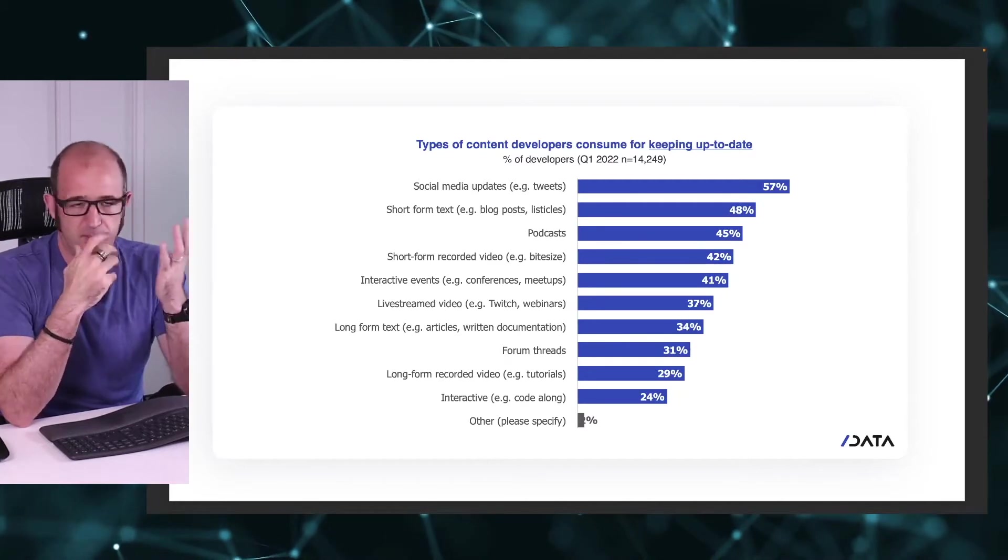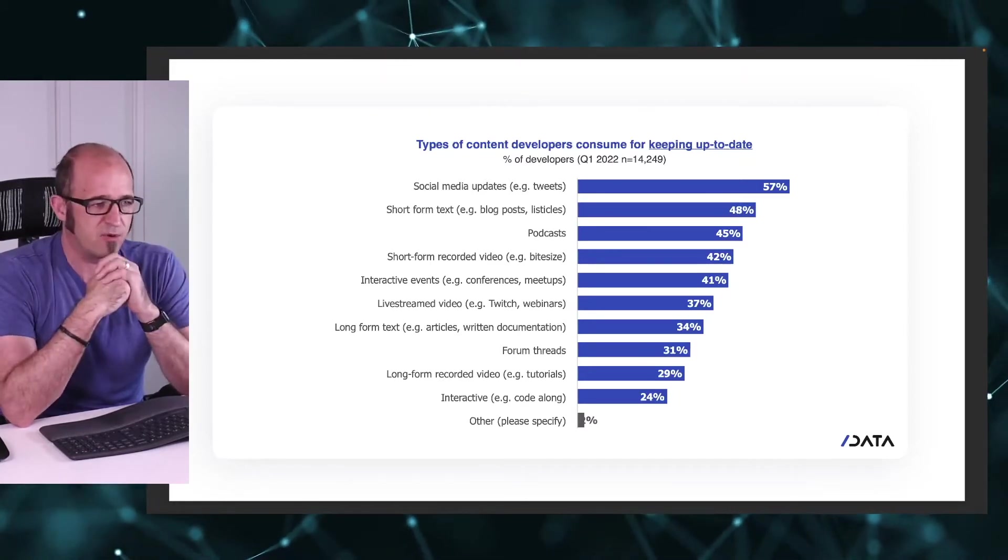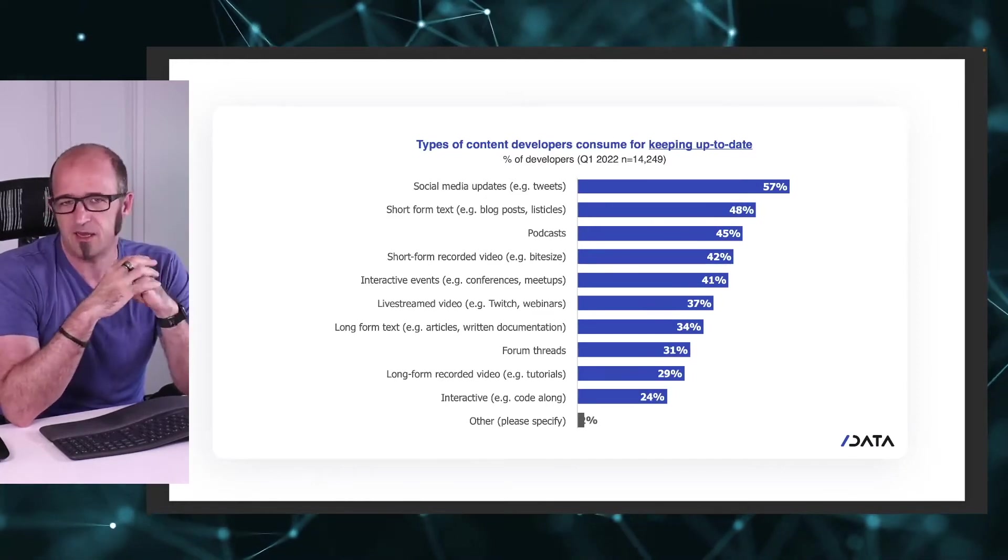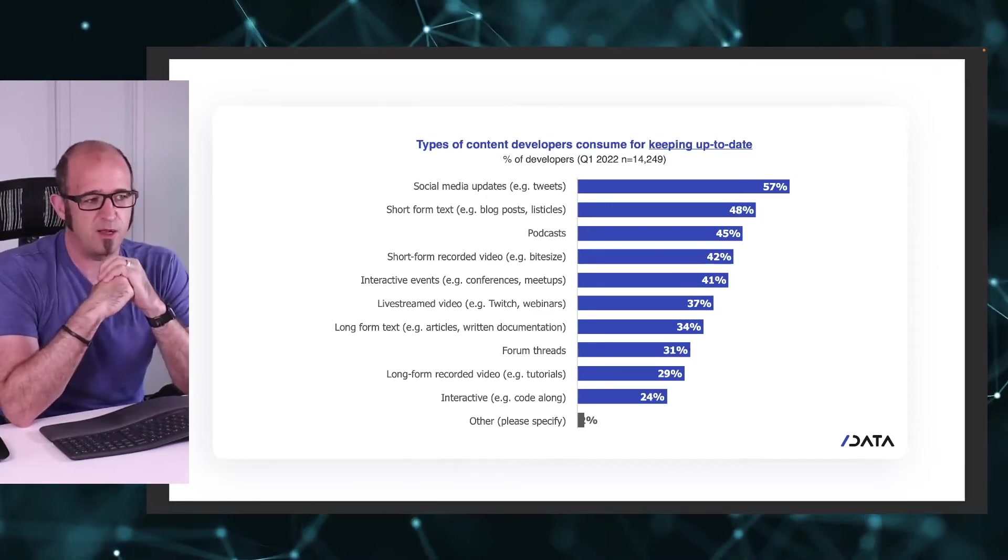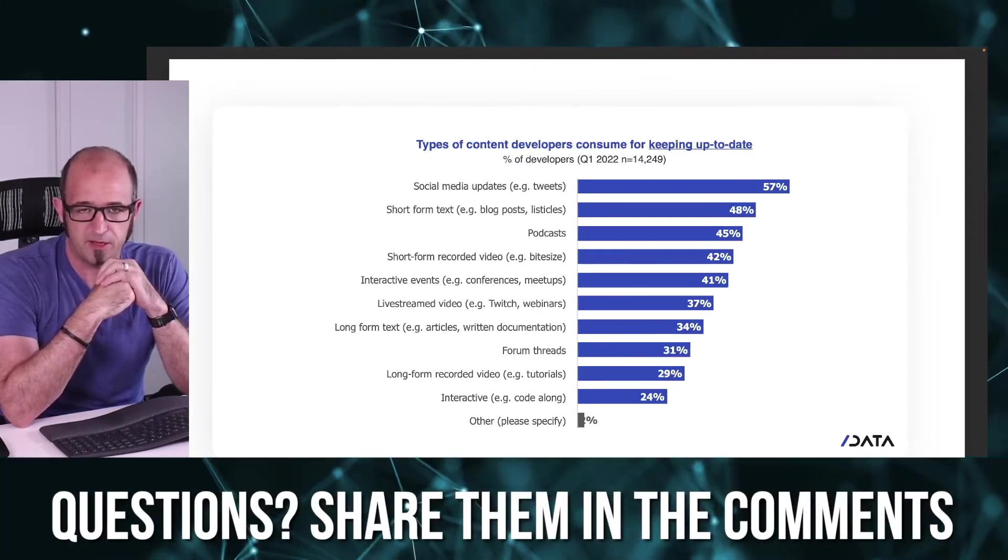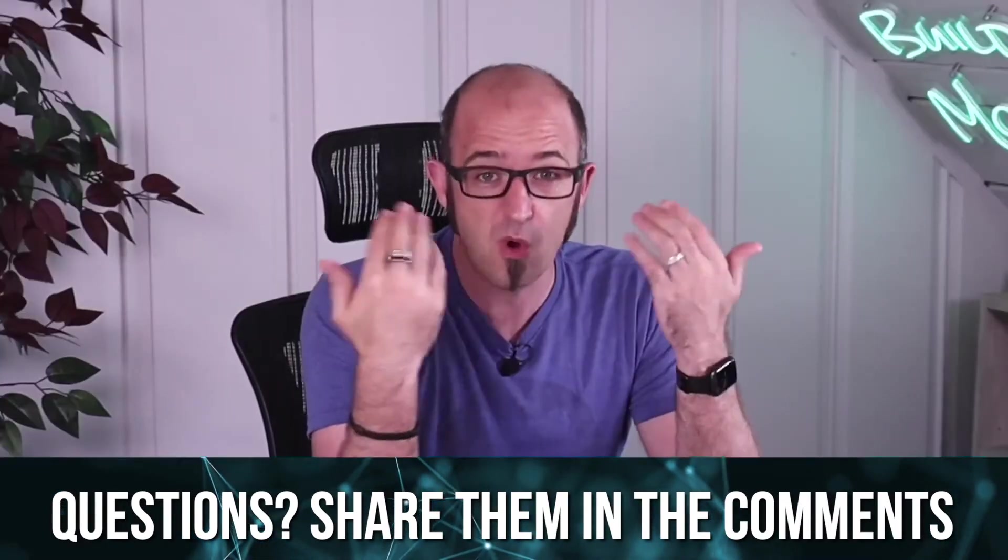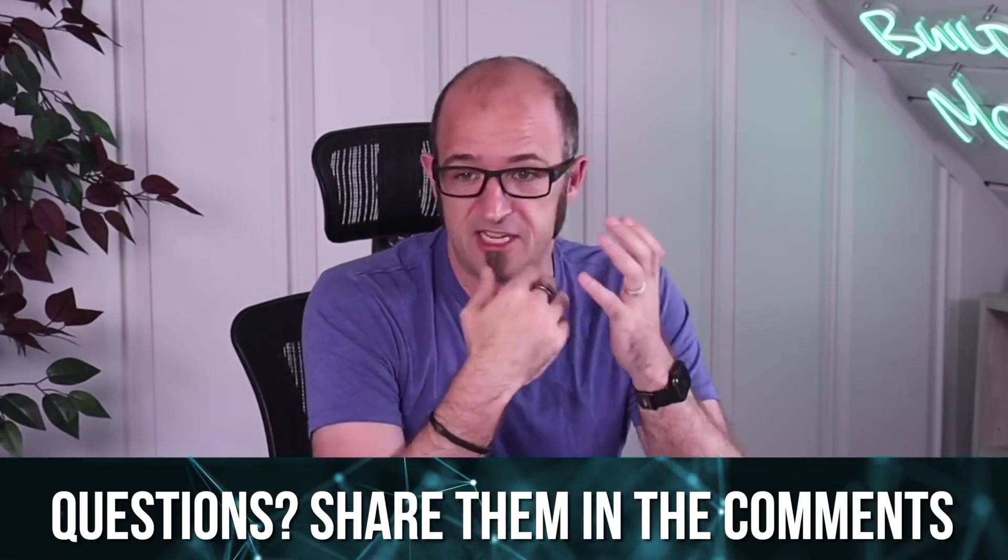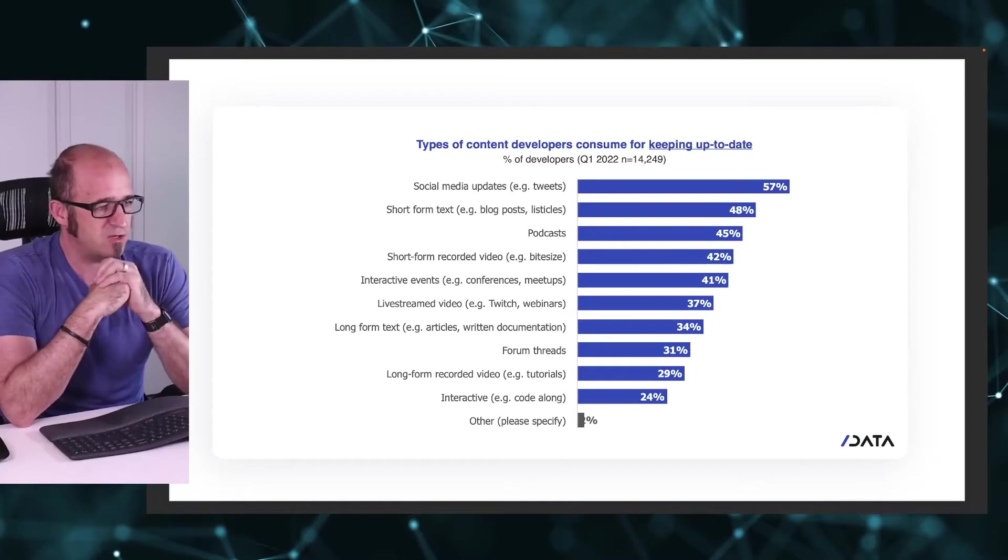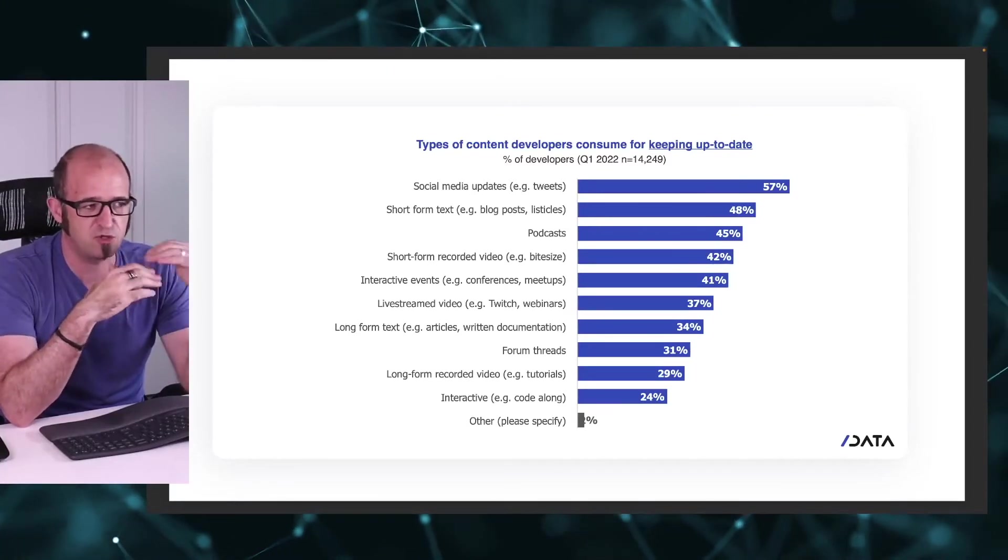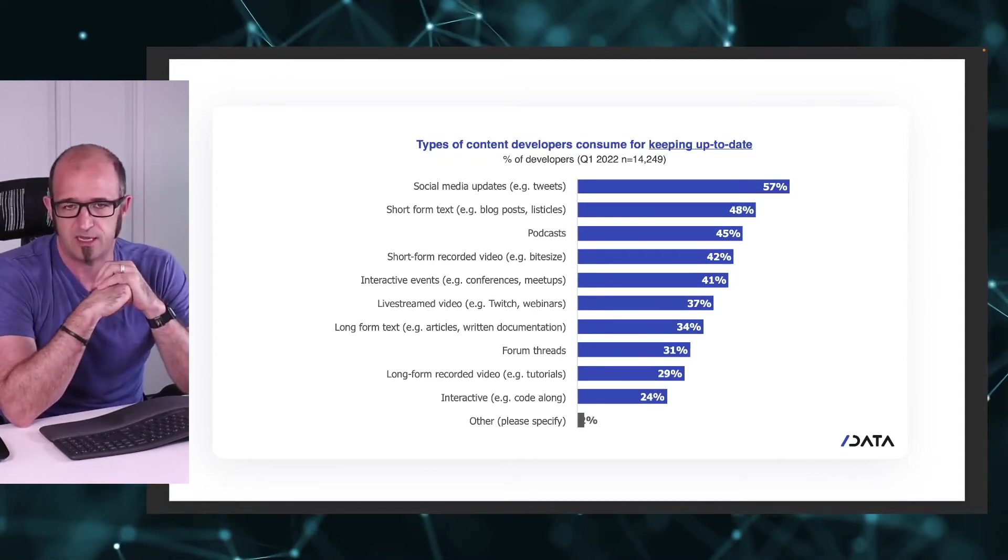I think one of the reasons why this data is pointing in the direction of social media is because we go there for new and exciting things. And then when we see something that's new and exciting, it takes us there. But we remember that's how we found it. Also, short-form text is how people keep up to date. Blog posts, listicles, not particularly surprising. Podcasts is down at 45%. This doesn't particularly surprise me. Podcasts are very popular with certain people and not popular with others. But short-form recorded videos. So short-form is what it's all about here, potentially with the exception of podcasts.